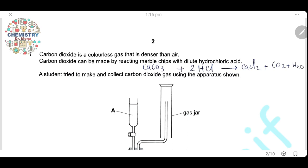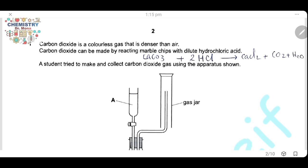Question 1. Carbon dioxide is a colorless gas that is denser than air. Carbon dioxide can be made by reacting marble chips with dilute hydrochloric acid. The equation is as shown: marble chips, calcium carbonate (CaCO3), react with hydrochloric acid, and the products are calcium chloride, carbon dioxide gas, and water.